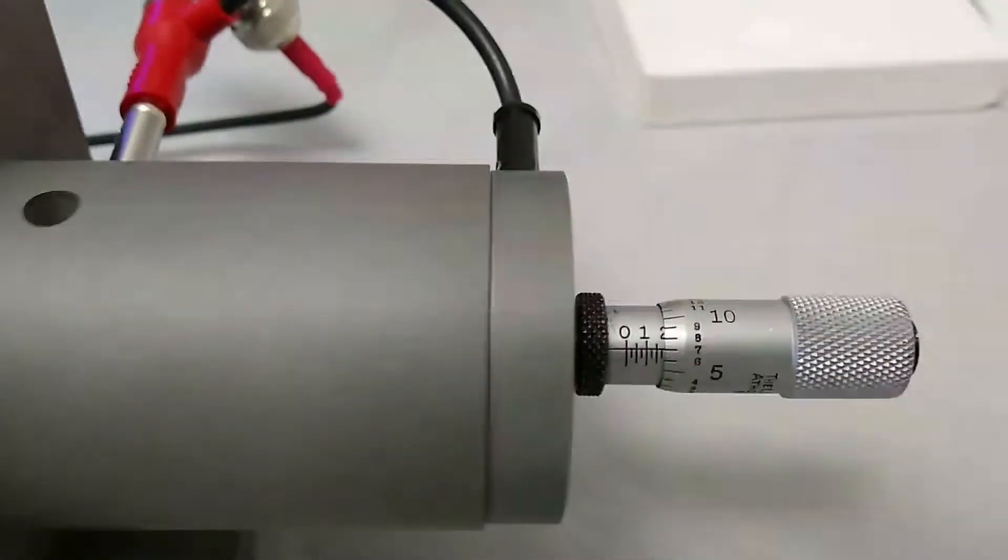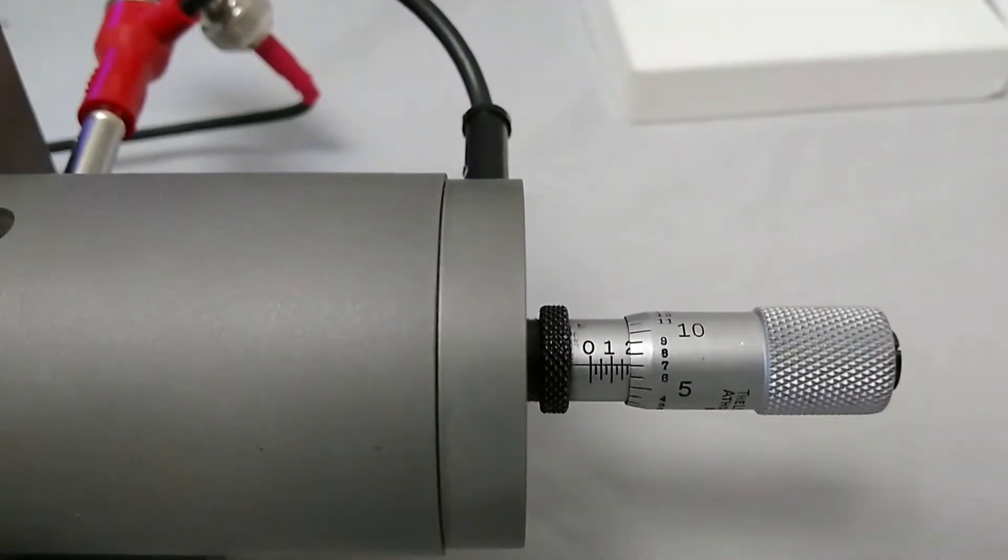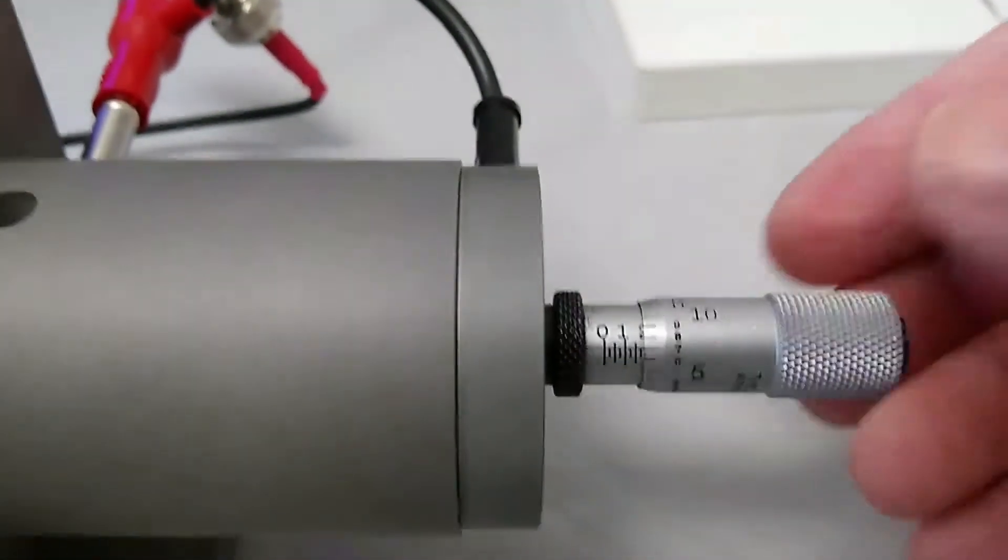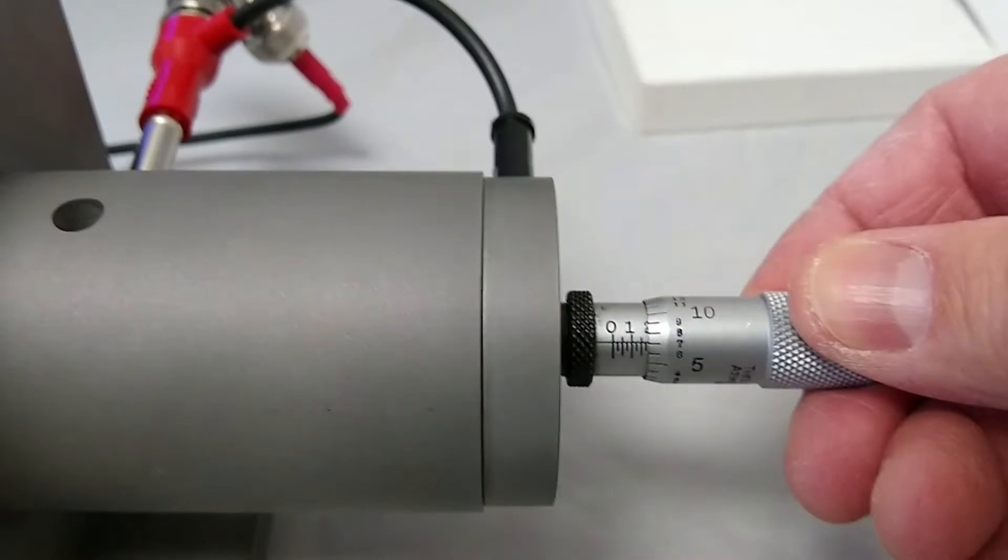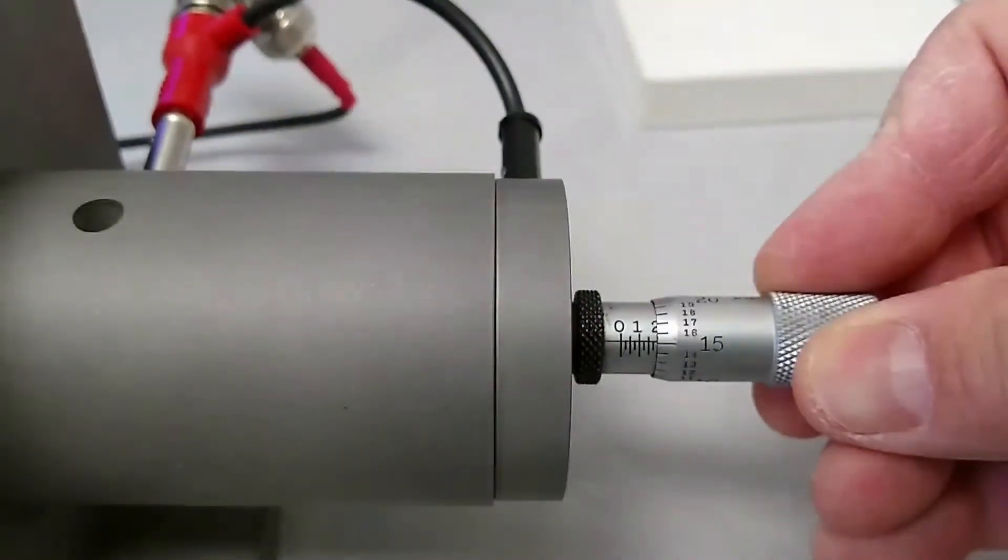So now that we've got those two values written down, we also take a look at the micrometer and see what the micrometer setting is. Once we've done that, we can basically loosen up the micrometer. So we're basically at 7. We can loosen up the micrometer to say 15.